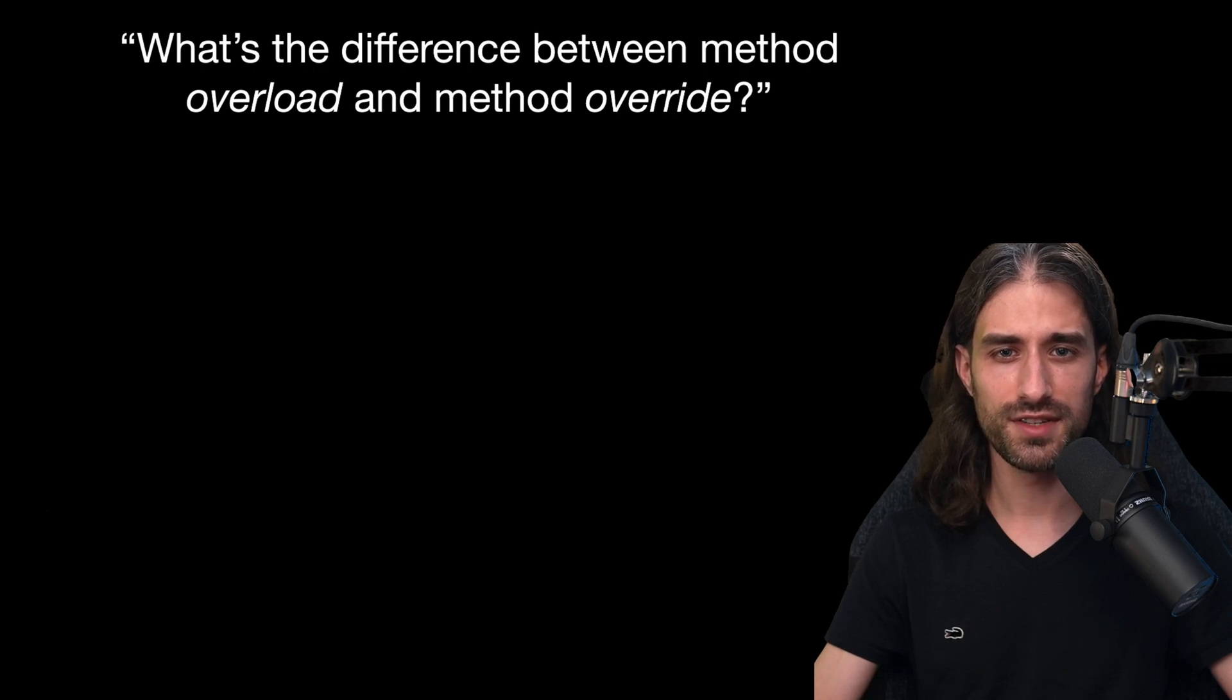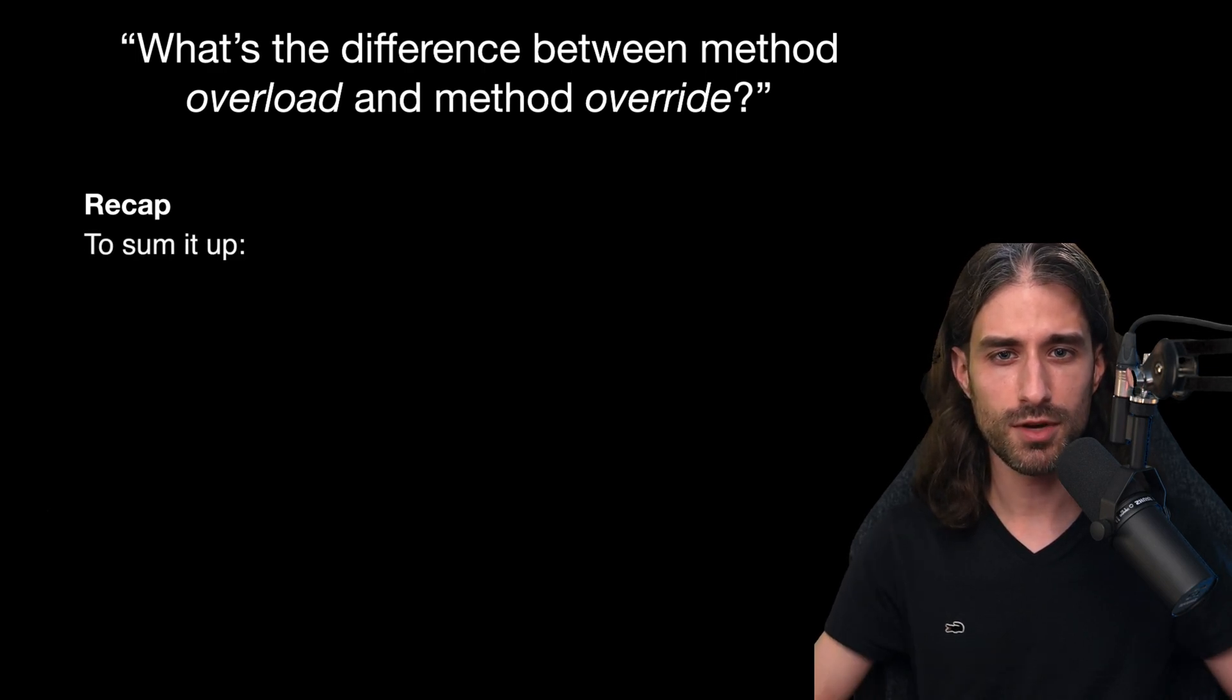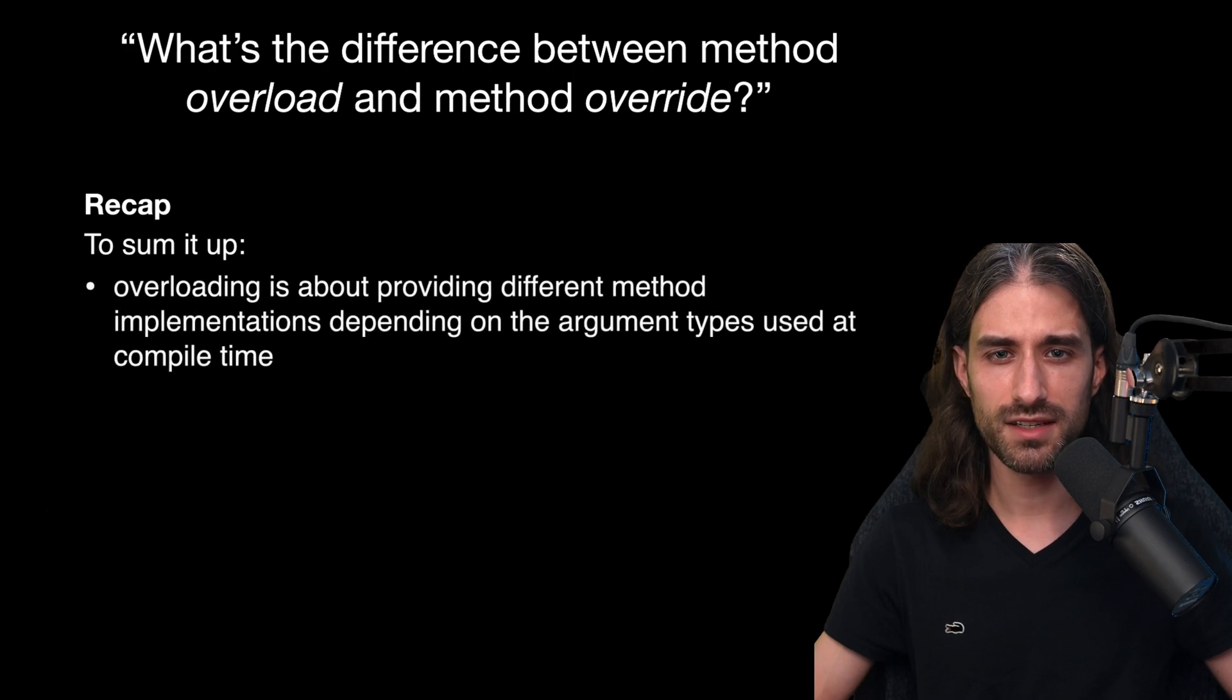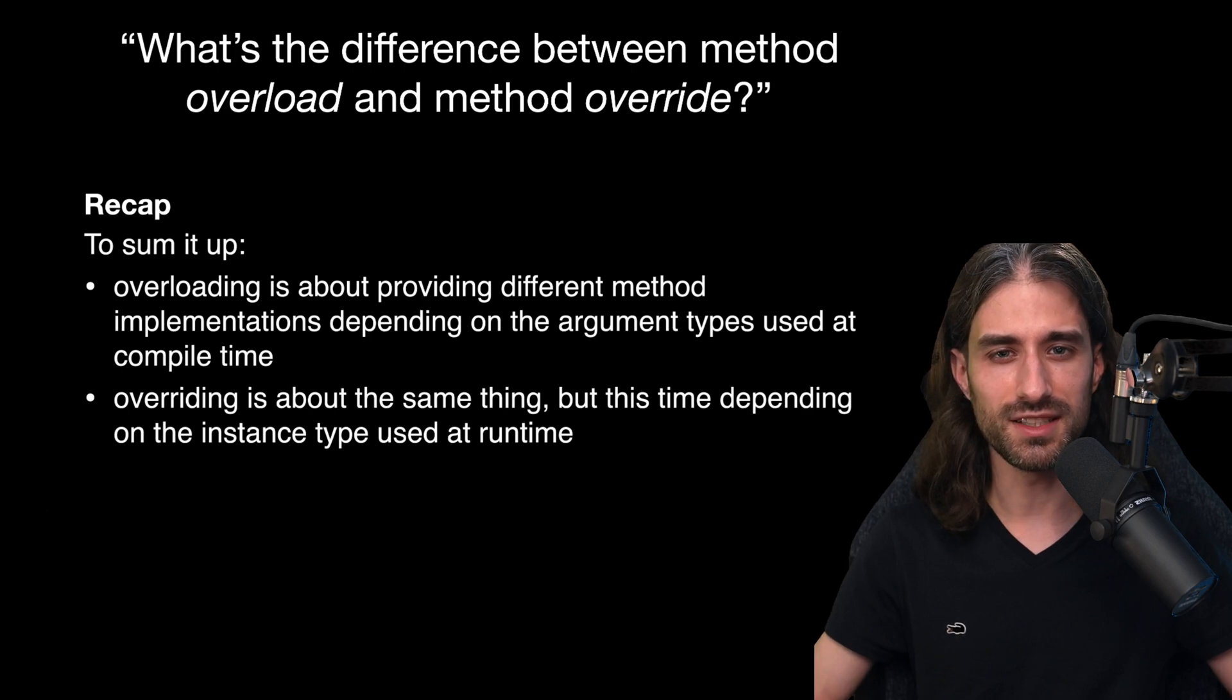Now that we're done with the answer, it's always good to finish with a bit of a recap in order to sum up what was quite a lengthy answer. So here we can sum up our answer by saying that overloading is about providing different method implementations depending on the argument types used at compile time, and overriding is basically about the same thing but this time depending on the actual instance type at runtime.